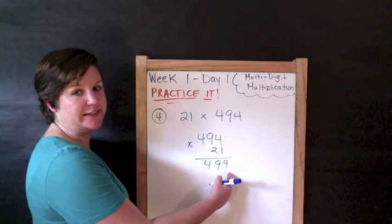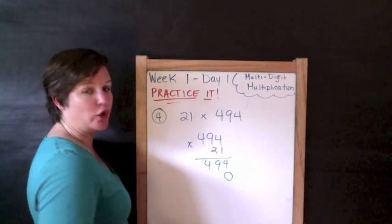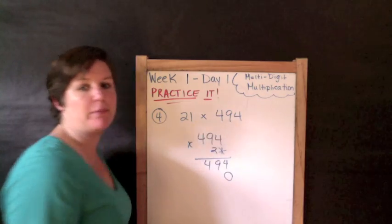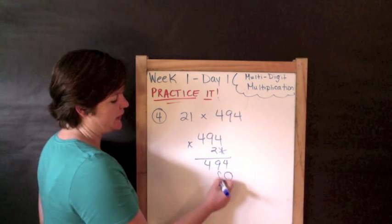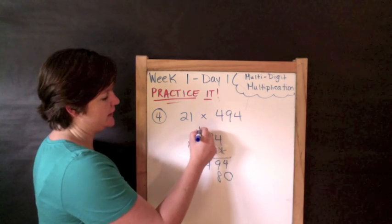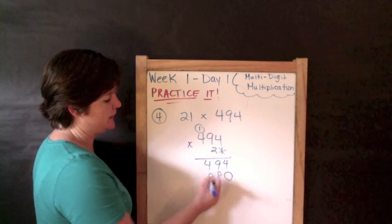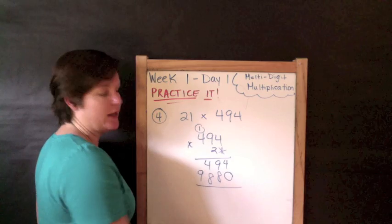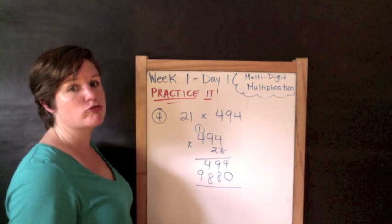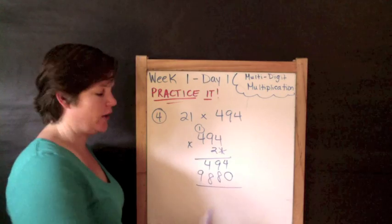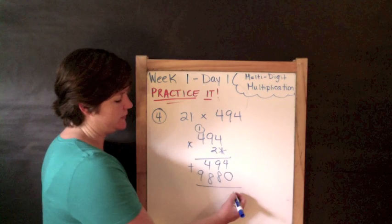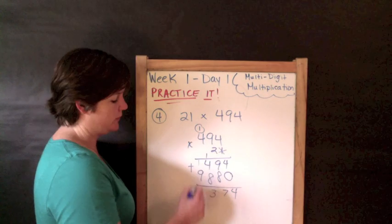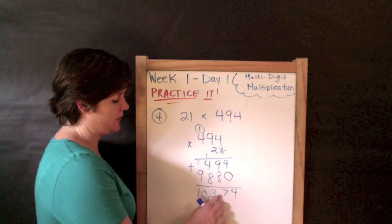One times four is four. One times nine is nine. One times four is four. Because four hundred ninety-four times one is four hundred ninety-four. What do I put right here to hold the place? A zero. Cross out my one. Get rid of my regroupies, but there's nothing up there. Now two times four is eight. Two times nine is eighteen. It's a two-digit number, so I need to regroup. Two times four is eight, plus one is nine. Now what? What do I do now? I add them. Four plus zero is four. Nine plus eight is seventeen, carrying one. One plus four is five. Nine is ten. Ten thousand three hundred seventy-four.